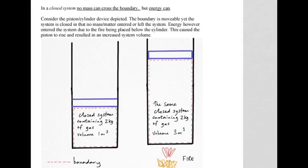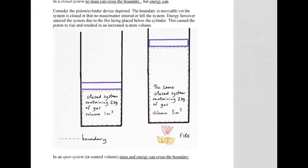Let's make a few definitions here. It's going to be a closed system — clearly no matter can enter or leave this space. The red dotted line indicates the boundary of the area of interest. The closed system contains matter or mass of two kilograms and a volume of one cubic meter. Now we light a fire underneath this cylinder. As you heat the gas, it increases in volume. Pressure tries to increase but the piston simply rises, and the same two kilograms of matter is now at a volume of three cubic meters — that's an example of a closed system.